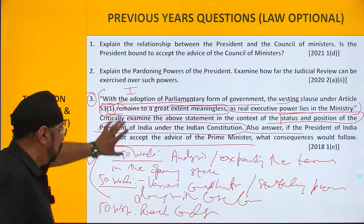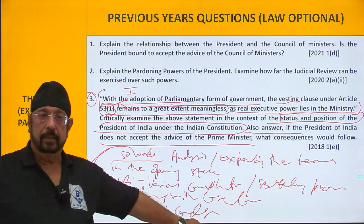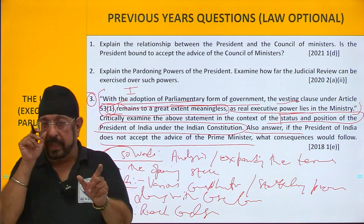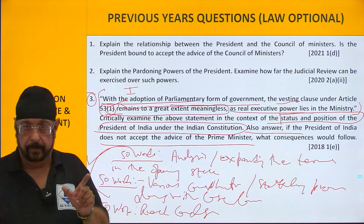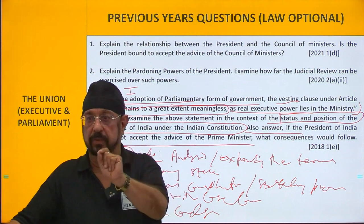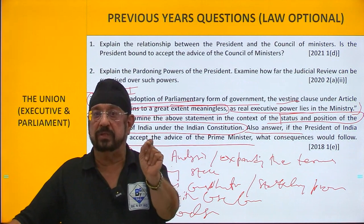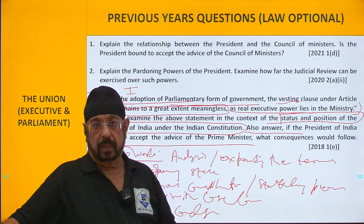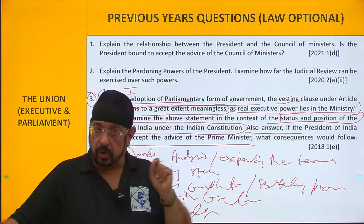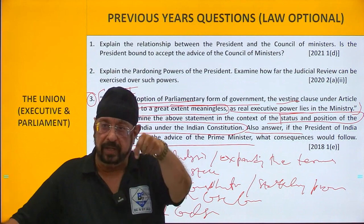Now link both parts and come to your conclusion. When it says 'critically examine,' whatever criticism is there, you mention that also — the general criticism, not your own views. According to some, the criticism is like this. However, always conclude your answer with what is prevailing now.